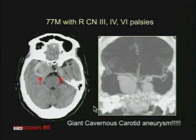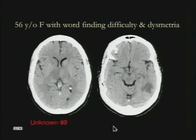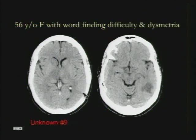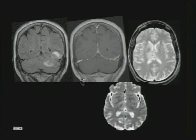Here's a 56-year-old with word-finding difficulty. There are multiple areas of hypodensity involving the right caudate head, right thalamus, left thalamus, and left temporal lobe. When you have bilateral thalamic abnormality, one thing to be thinking of is internal cerebral vein or deep venous sinus thrombosis. This is a subtle case on CT, but the internal cerebral veins are way too dense, and the straight sinus is also very dense.